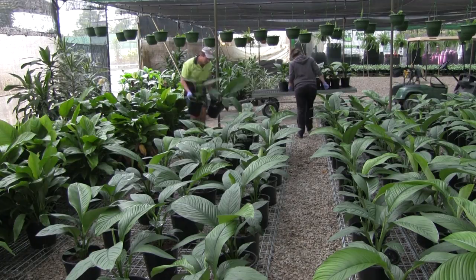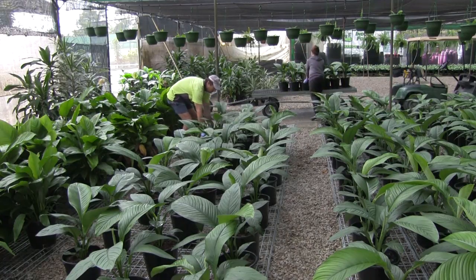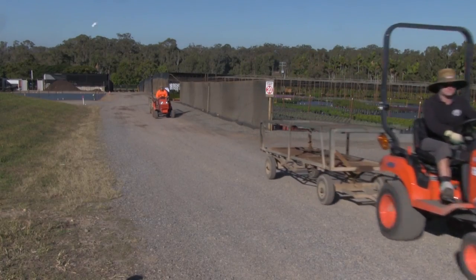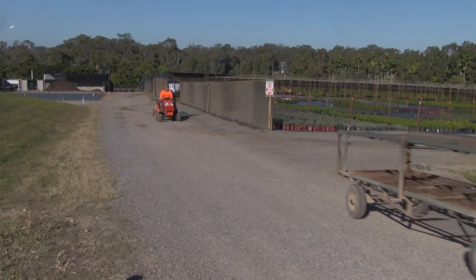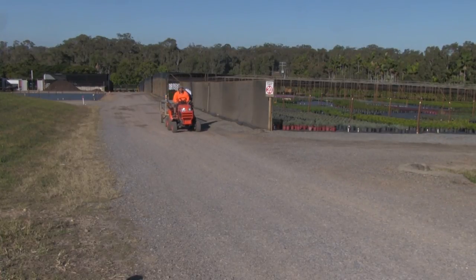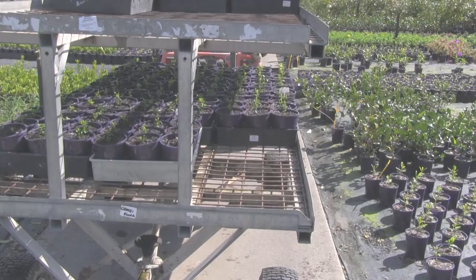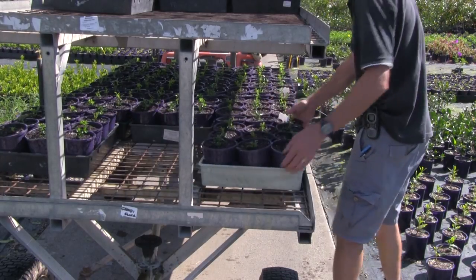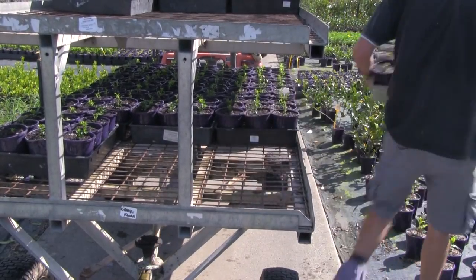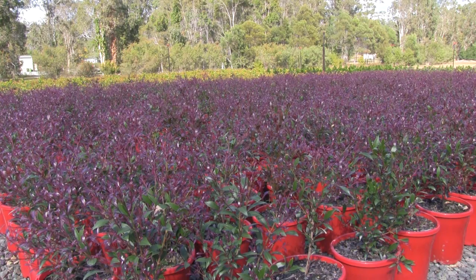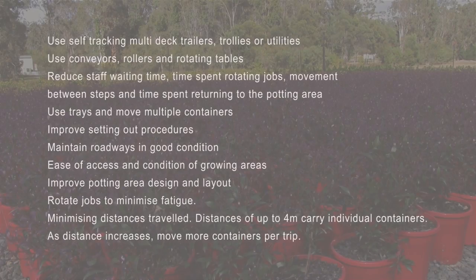Studies have shown that potted plant handling can be the most costly part of the potting operation. Travelling distances contribute a large proportion of the time spent in moving plants from the potting operation to field areas. Efficiency can be improved by handling multiple units and minimising the distances travelled. To minimise single trips and the total distance travelled, the following strategies should be considered.